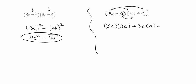So we have 3c times 3c, then we have 3c times 4, then we have minus 4 times 3c, and then we have minus 4 times 4.